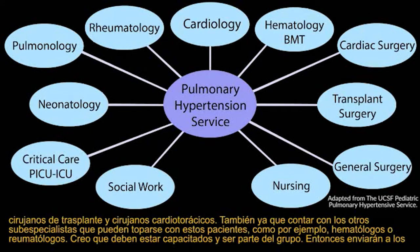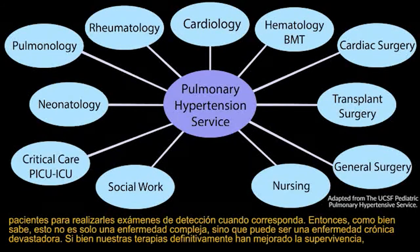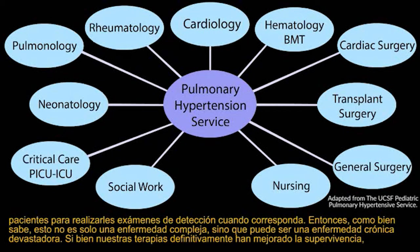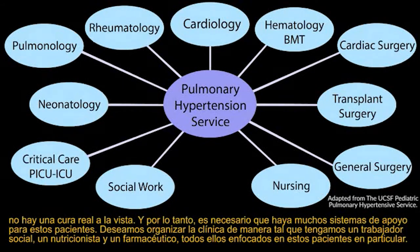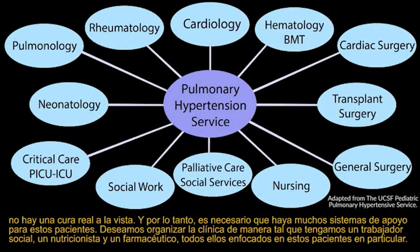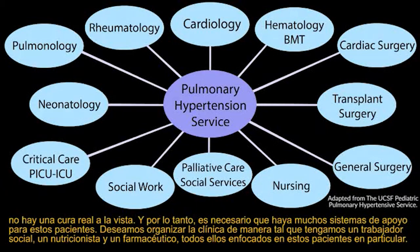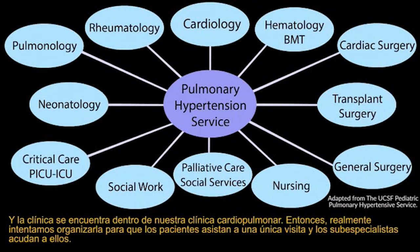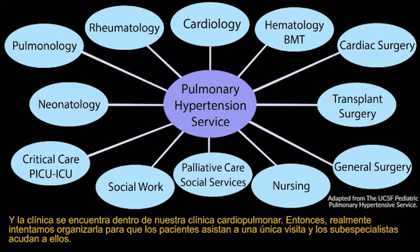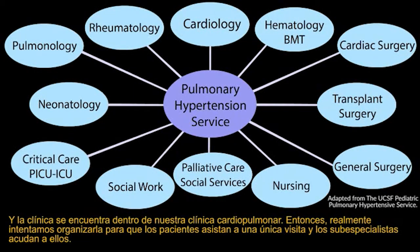Other subspecialists who may encounter these patients — hematologists, rheumatologists — need to be educated and be part of the group so they'll send patients for screening when appropriate. This is not only a complex disease, but a devastating chronic disease. Although our therapies have certainly improved survival, there's no real cure in sight, so there needs to be a lot of support systems. Our clinic has a social worker, nutritionist, and pharmacist all focused on these particular patients, organized so they have one visit and the subspecialists come to them.